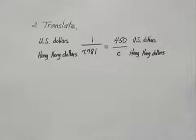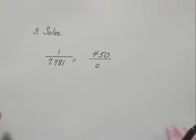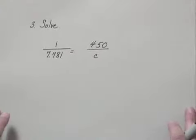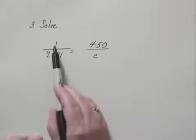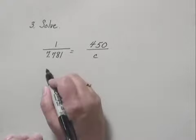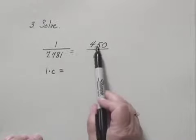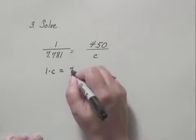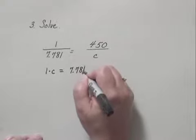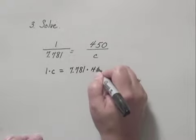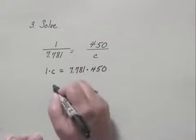Now we solve this proportion. We can solve by equating cross products. We have 1 times C equals 7.781 times 450.